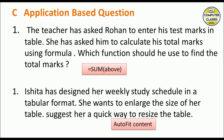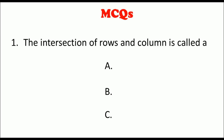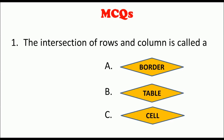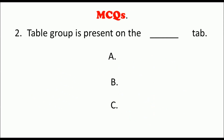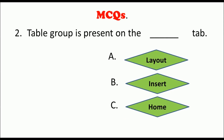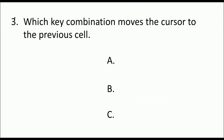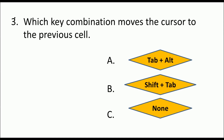Now for MCQs. The first one: the intersection of rows and columns is called — border, table, or cell? When rows and columns intersect we see cells, so the answer is Cell. The table group is present on which tab — layout, insert, or home? You always insert a table, so it is on the Insert tab. Which key combination moves the cursor to the previous cell — Tab, Shift+Tab, or none? It is Shift+Tab.